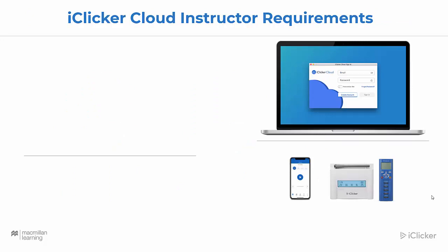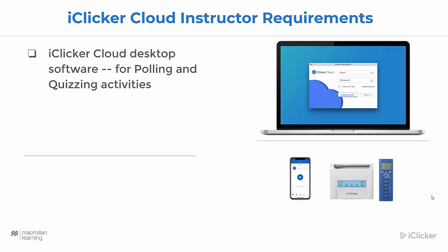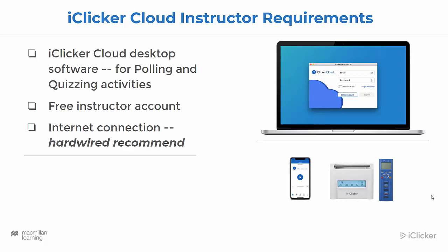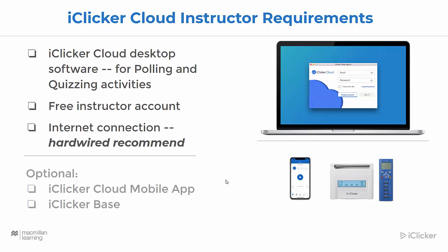Here's what you'll need as an instructor to run iClicker Cloud in your class. iClicker Cloud requires the iClicker Cloud desktop software, an instructor account, and we recommend having whatever computer you're using to run iClicker Cloud hardwired to the internet. This is recommended but not required. If you're hardwired to the campus internet, a blip in the campus Wi-Fi won't knock you out of a session, and you'll lessen the load on your classroom's Wi-Fi. You have the option to use the iClicker Cloud mobile app on your mobile device or tablet to control polling questions and your presentation, which allows you to walk around your classroom while you teach. If you decide to allow students to use iClicker remotes, you'll need the iClicker base hooked up to the computer you're using to run iClicker Cloud.